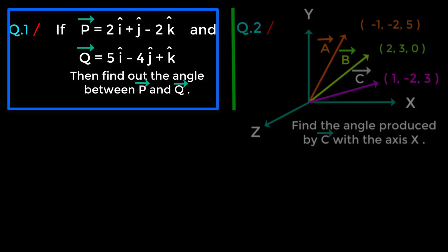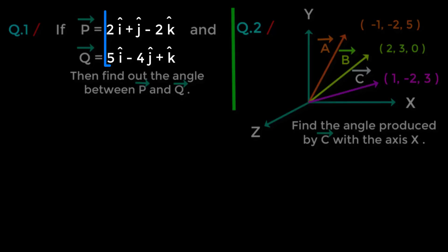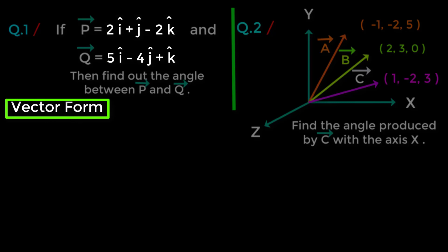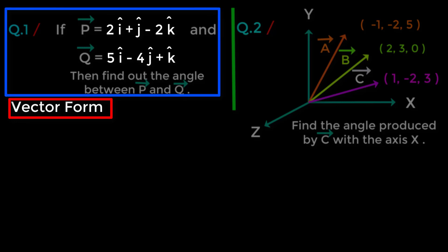In this first question, we have two vectors — p vector and q vector — and we also have unit vectors i cap, j cap, and k cap with coefficients. The presence of unit vectors with coefficients is called vector form. Keep in mind that this vector form is the most valuable clue for this question, because it will tell us which formula we should apply.